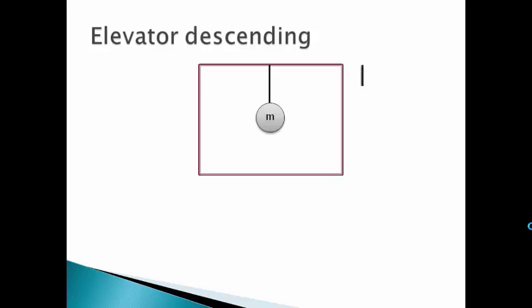Next case: elevator descending. The elevator descending will have acceleration in the downward direction. Hence it is our AFR. Therefore, the pseudo force will act in the upward direction with magnitude M·A.